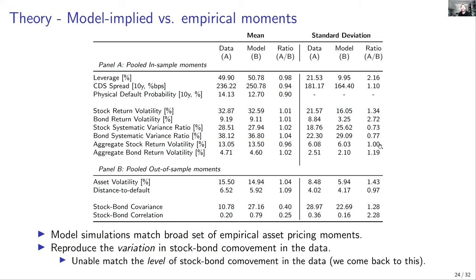However, although the model matches the mean and standard deviation of the estimation moments, it fails by a large amount to match the out-of-sample level of covariance and correlation. The model generates a level of both that is roughly three times too large relative to the data — this is what we call the correlation puzzle.